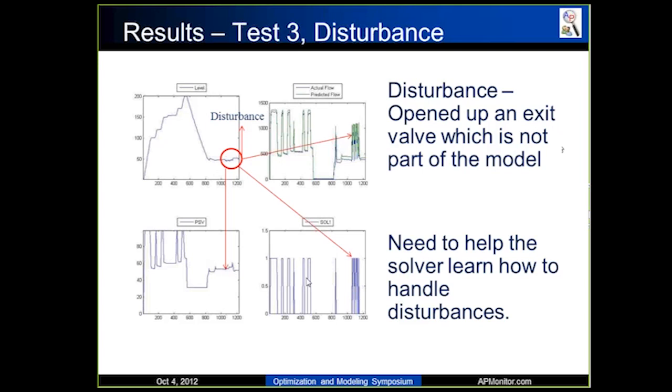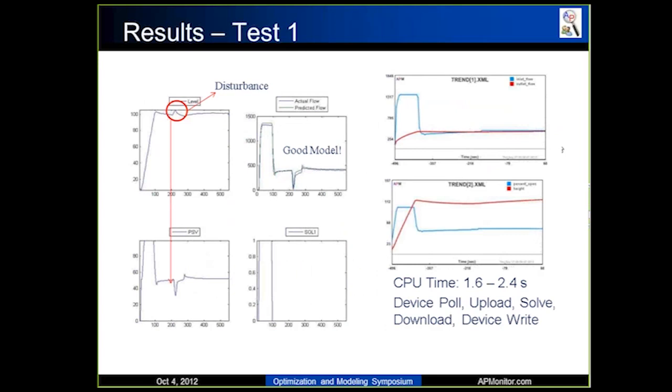And just to get some information about how much time it takes to do these things. For the CPU time, it takes about 1.6 to 2.4 seconds for it to solve. And I just want to point this out. What this means is the time it takes to poll the device, to get the information from the device, to upload that information to the server, to solve that information, to solve the mixed-integer nonlinear program problem, then to download the information, and then to write that to the device. So that's a lot of stuff going on in about two seconds, so I'm pretty pleased with how fast we're able to do it. And it usually solves in iterations between four to seven. And obviously this goes really fast because it's a very simple model, but it's really important to give hope that these things can be done, that you can do real-time mixed-integer nonlinear programming problems, and you can do them real-time.